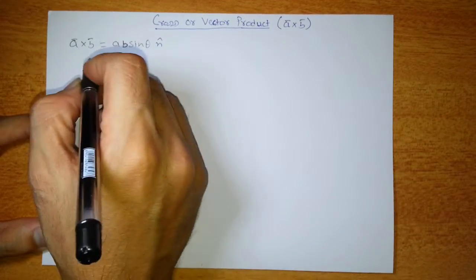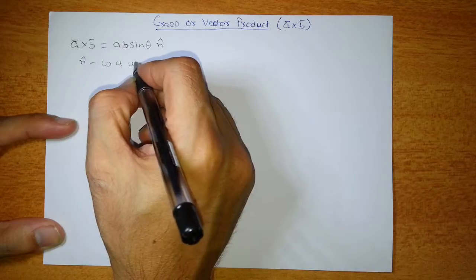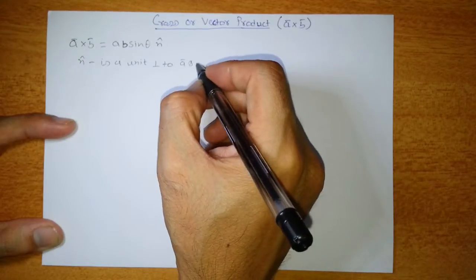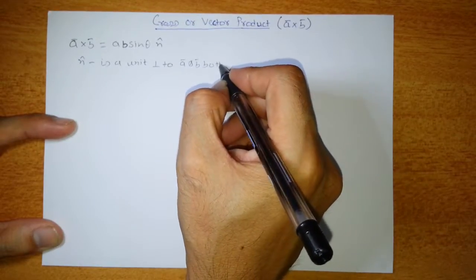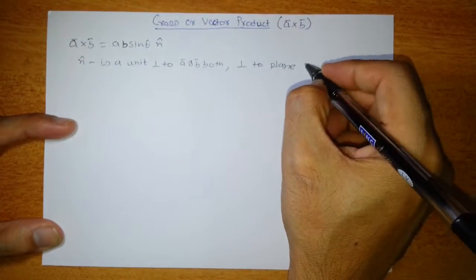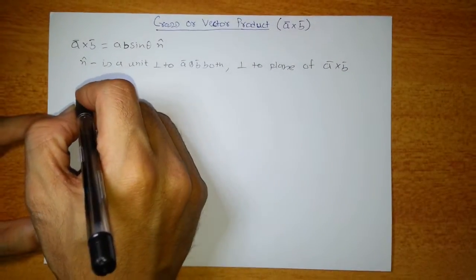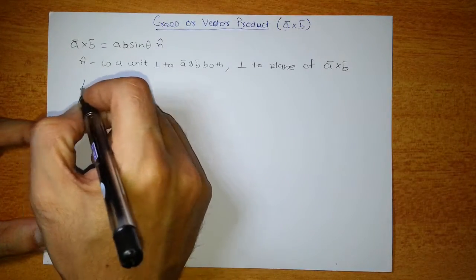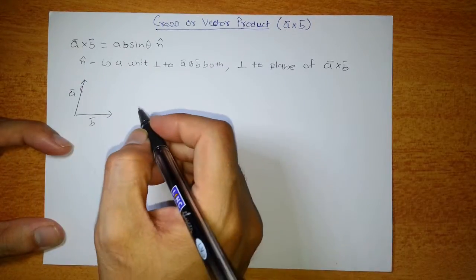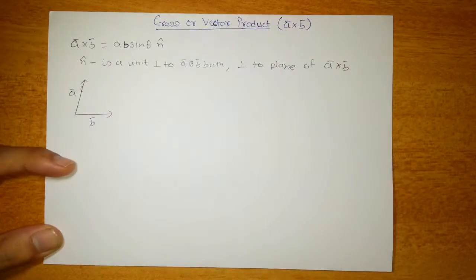Since the result is a vector quantity, you have to add a unit vector n̂. The special thing about n̂ is that it is a unit vector perpendicular to the plane of A and B — perpendicular to both A and B. For example, if A and B are in the plane of paper, then A cross B will be perpendicular to this plane.